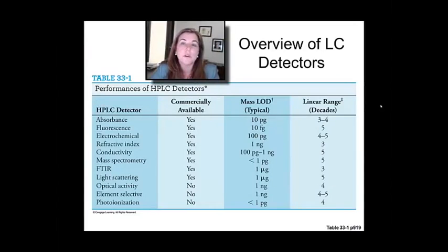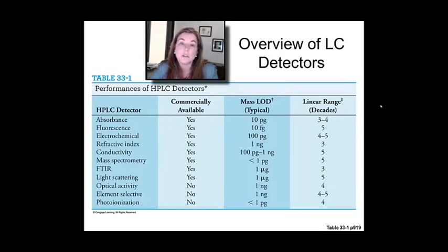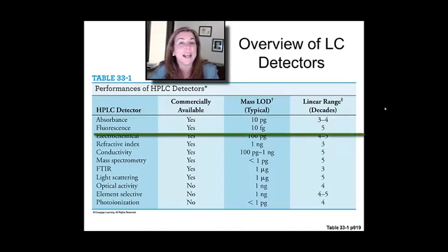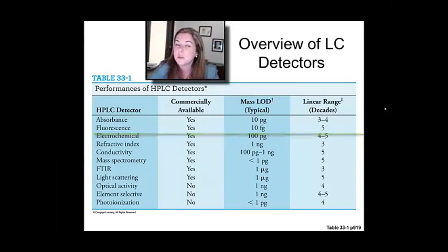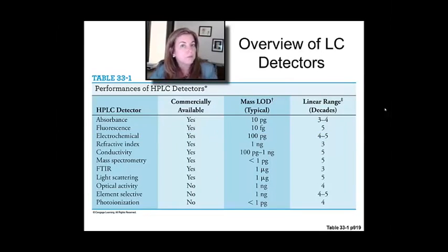Here's an overview of LC detectors — all the ones that you can buy. You'll notice in your reading examples of fluorescence detectors. Those can be extremely sensitive; fluorescence can get you down to femtogram levels if you're lucky enough to have an analyte that has a good fluorescence yield. Absorbance is kind of on the picogram scale. Refractive index is at the nanogram level, so pretty functionally different detection limits.